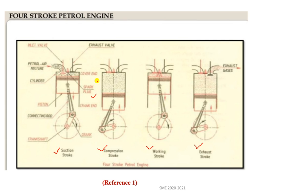Whenever we crank or start the engine — whether by button start or kick start — the piston moves from the Top Dead Center (TDC) to the Bottom Dead Center (BDC). TDC is the topmost position of the piston and BDC is the bottommost position. This downward movement from TDC to BDC constitutes the suction stroke.